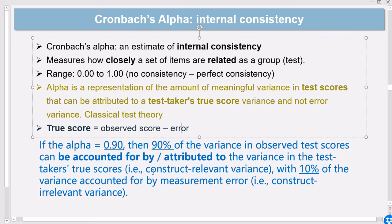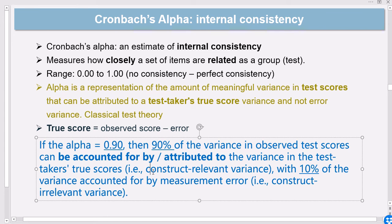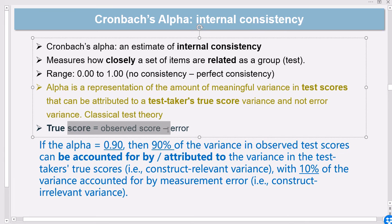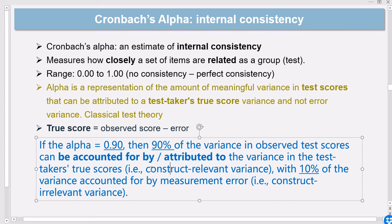Here's an example of how to apply this concept: if the Cronbach's alpha value is 0.90, then 90% of the variance in the observed test scores can be attributed to the variance in the test-takers' true scores. In other words, you have 10% of variance accounted for by the error of measurement or measurement error.